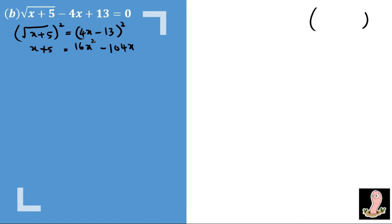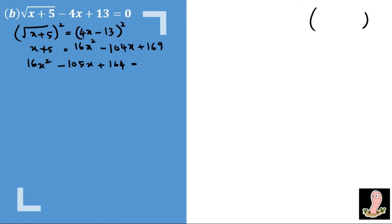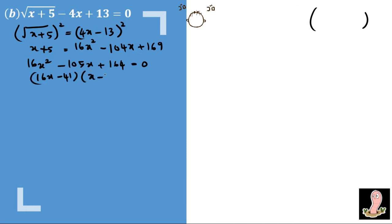After squaring, 13 squared gives 169. Combining everything and making the x² coefficient positive gives 16x² minus 105x plus 164 = 0. Factoring this gives (16x − 41)(x − 4) = 0, so x = 41/16 or x = 4.